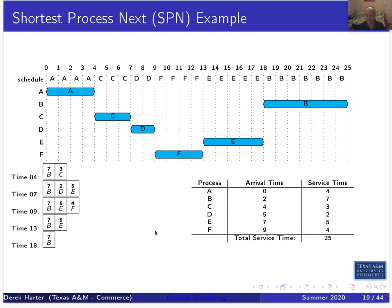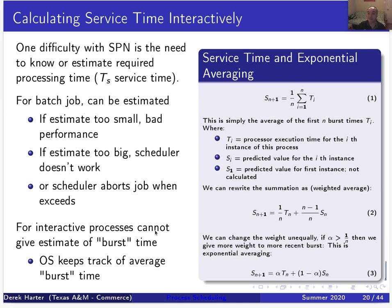In a real system where you don't know service times, for both Shortest Process Next and Shortest Remaining Time you want to estimate how long the next burst will last — how long until the process needs to do IO again. If you knew that, you could differentiate between processor-bound processes with long average times between IO bursts, and IO-bound processes with short times between bursts.